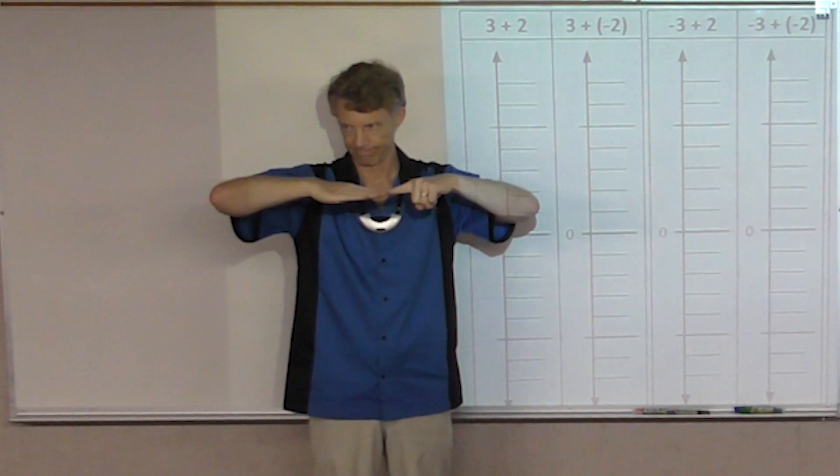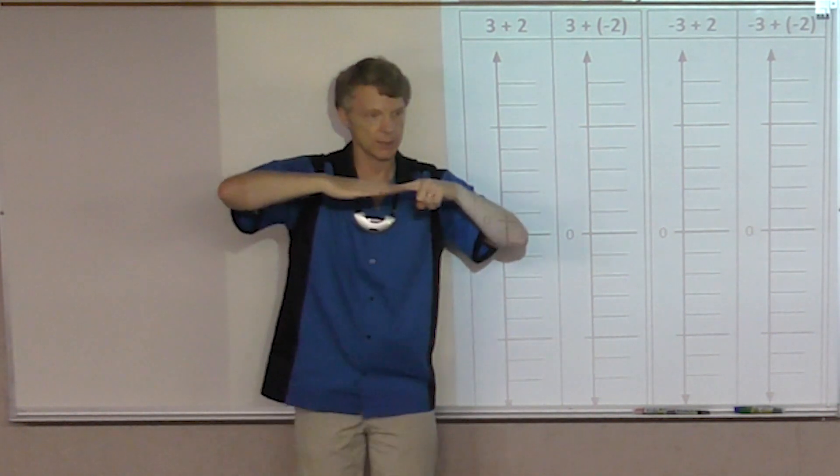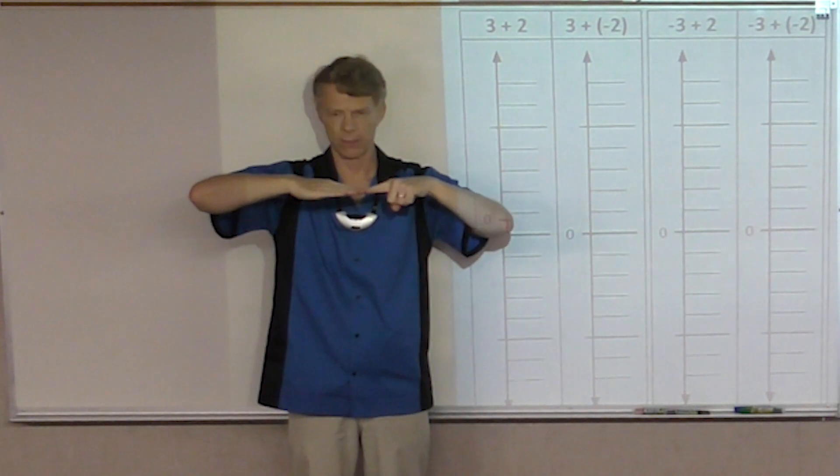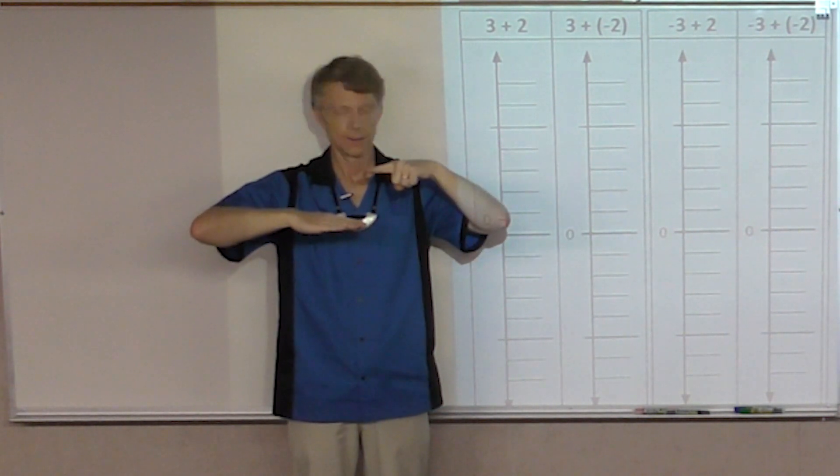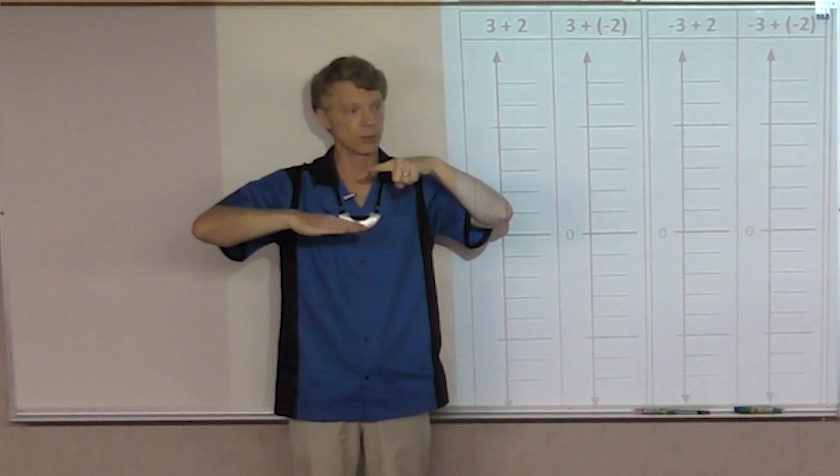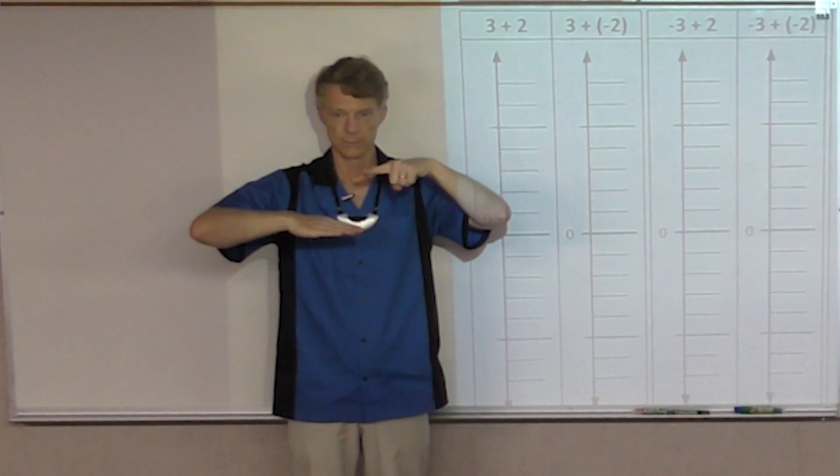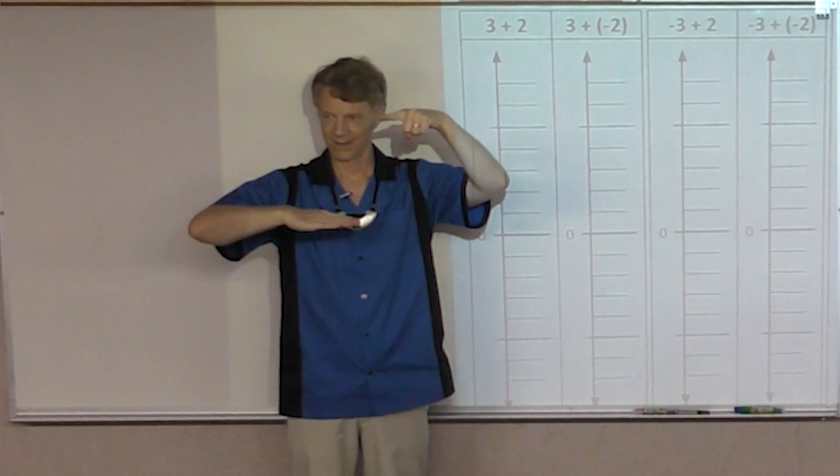So here's zero. Now, three plus two. Show me what would happen when we start with, when we add a three to this. We're going to go up to here. Alright. Now I want to add a two. Where do I go? Up to there. Alright, let's do that again. Ready?